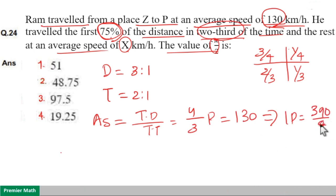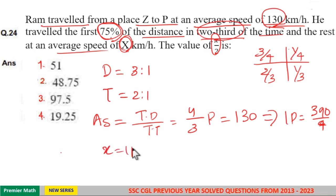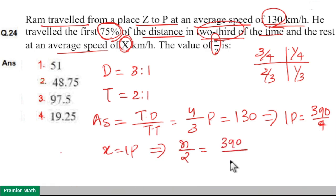That is 390 by four parts. Now here we need the value of x by two. Here x means one part by one part. X is equal to one part. One part is 390 by four. So we need x by two. X by two is equal to 390 by four into two. That is eight.